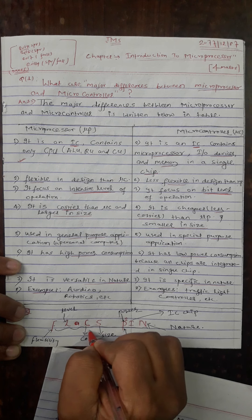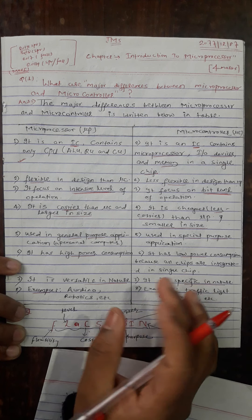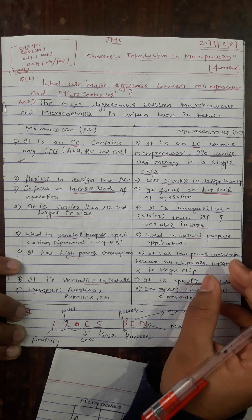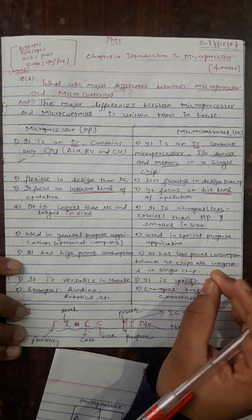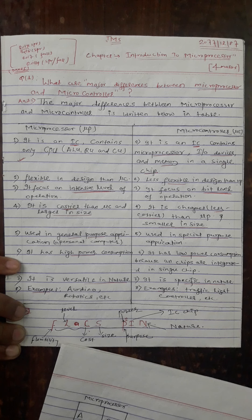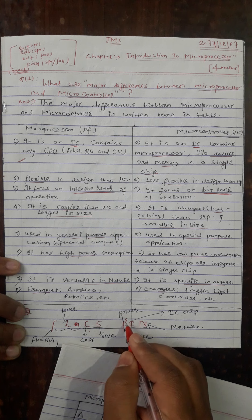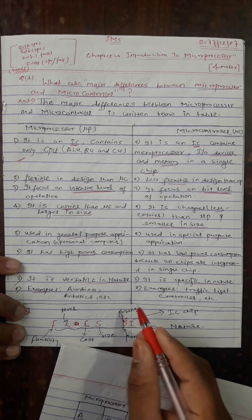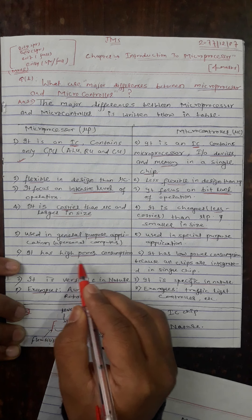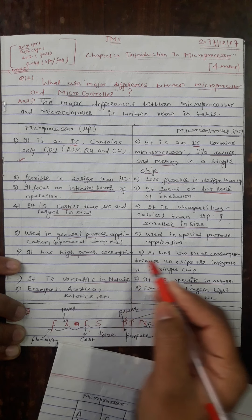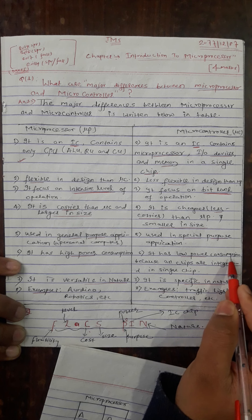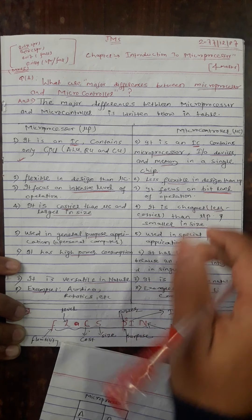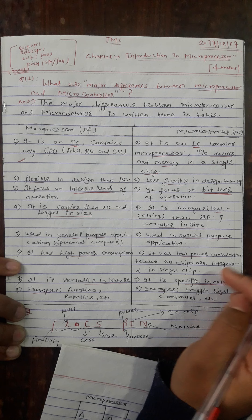A microprocessor is a little more costly and larger in size than a microcontroller. A microcontroller is less costly and smaller in size than a microprocessor. A microprocessor has high power consumption, while a microcontroller has low power consumption because all chips are integrated in a single chip.